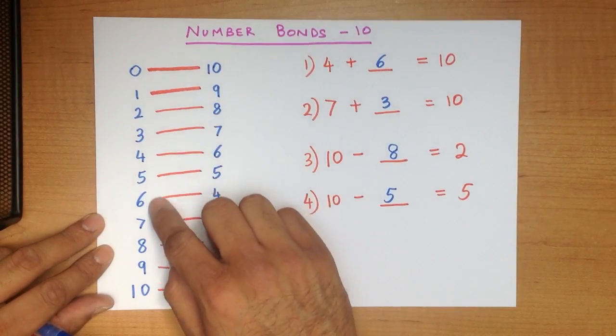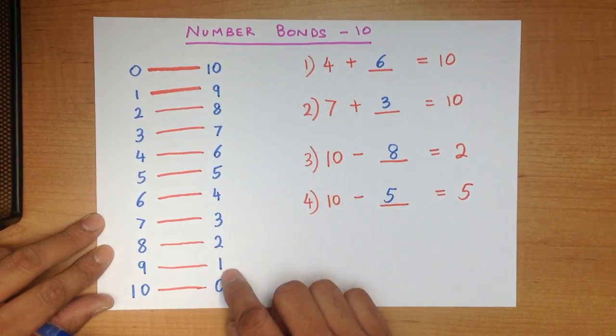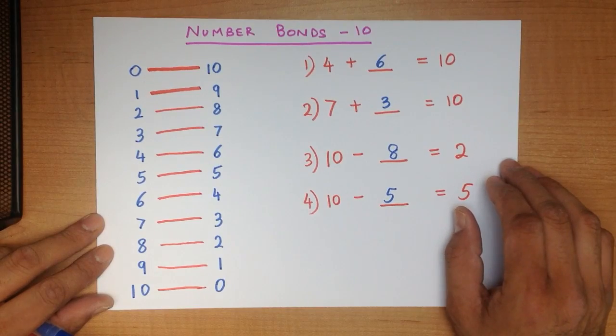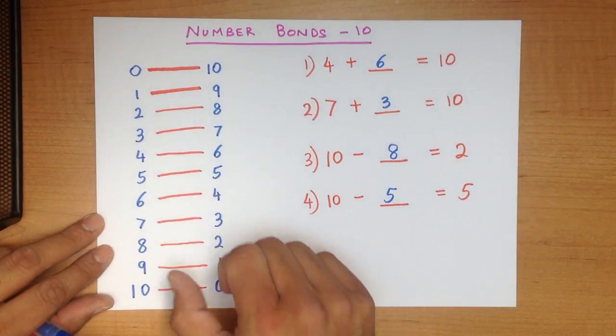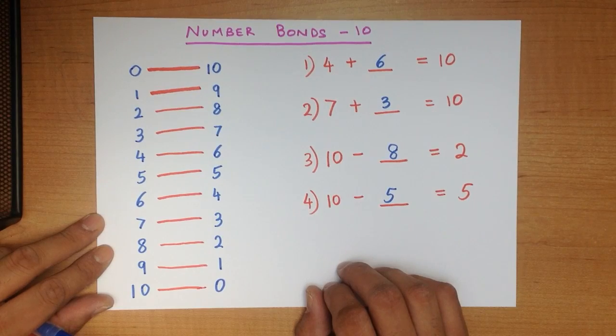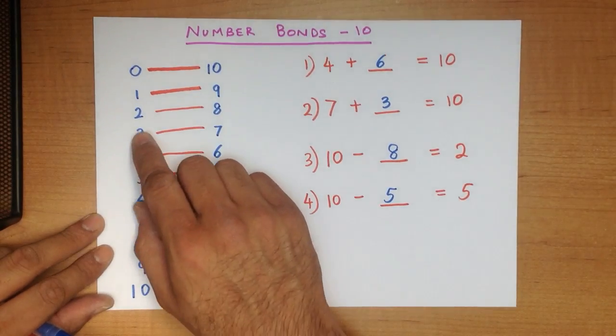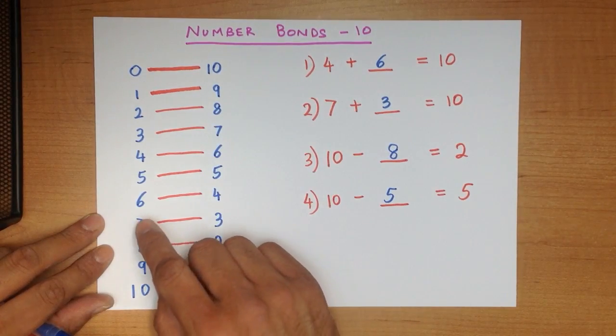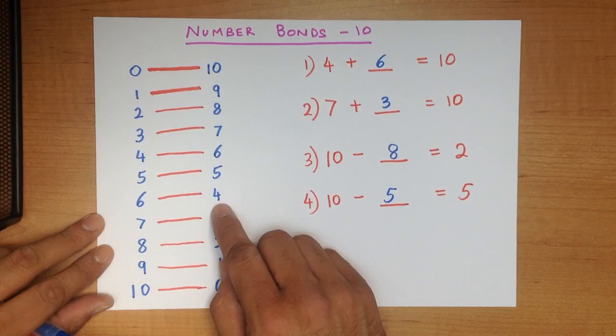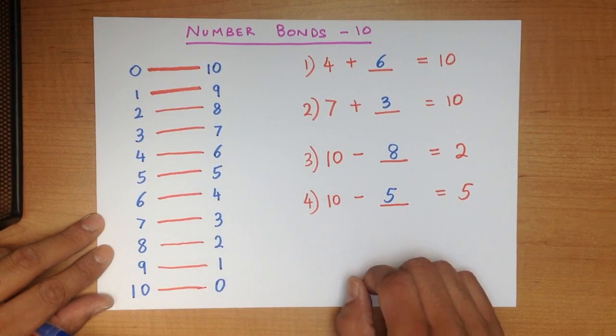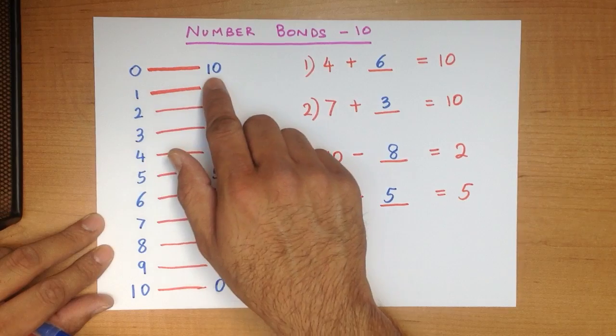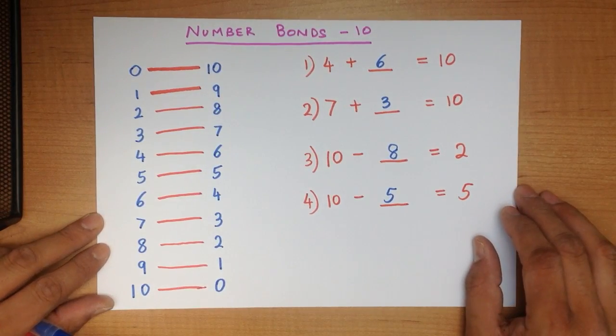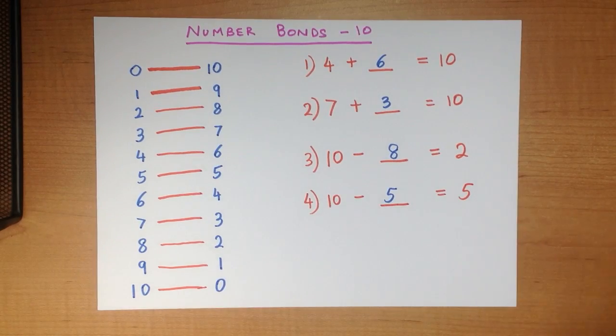Now once you have learned how to do this by writing, you should really do everything you can to memorize these numbers. Just picture this in your head. The teacher says, what number added to 2 makes 10? You should know straight away it's 8. What number added to 6 makes 10? It is 4. What number added to 0 makes 10? It is 10. It's as simple as that. And that is number bonds to 10.